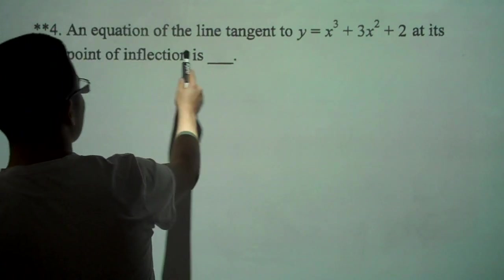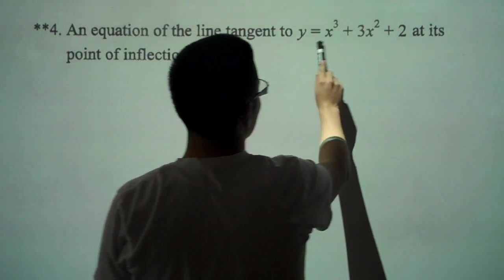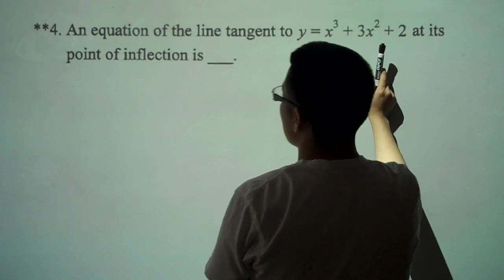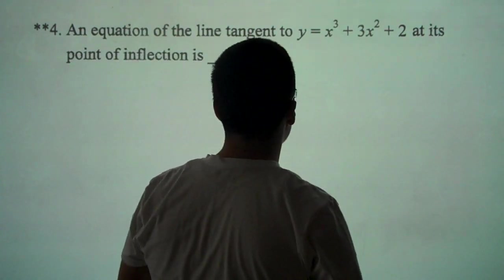Okay, an equation of a line tangent to y equals x cubed plus 3x squared plus 2 at its point of inflection is. For this equation,